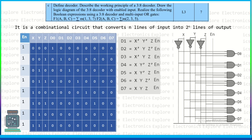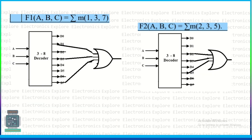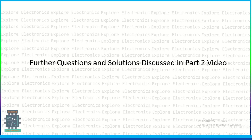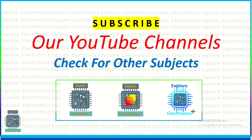Two Boolean functions are implemented using the 3-to-8 decoder. For F1 = Σm(1,3,7), output lines 1, 3, and 7 of the decoder are connected to a single OR gate, giving F1. For F2 = Σm(2,3,5), output lines 2, 3, and 5 are connected to another OR gate, giving F2. Further questions will be discussed in Part 2 — thank you, watch for that video uploading soon.